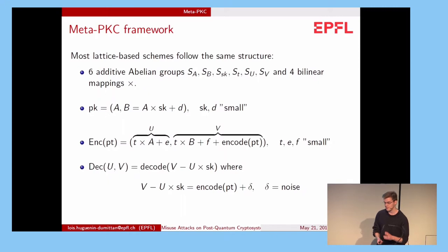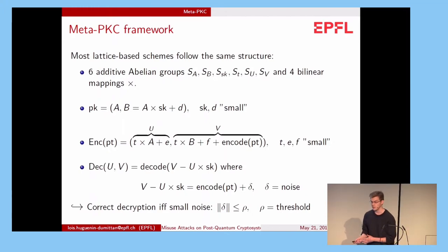In the decryption process, we receive the two ciphertexts U and V. First we compute V minus U times the secret key, which actually equals the encoding of the plaintext plus some noise delta. And then we apply the decoding function on this value. So it follows that the decryption is correct if and only if the noise delta is small. Small means here that the norm of delta is smaller or equal than rho, some threshold.